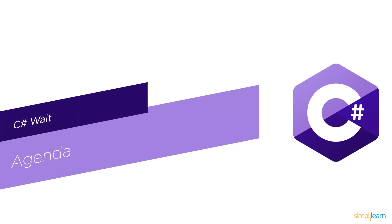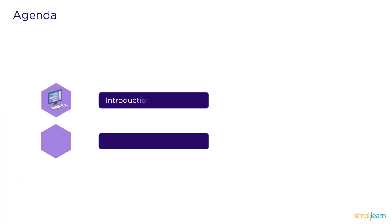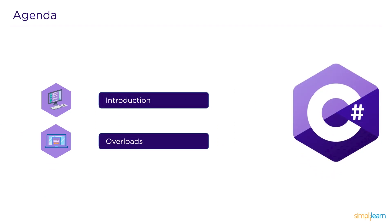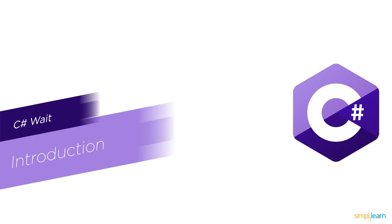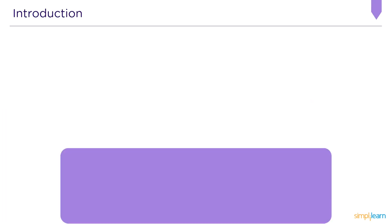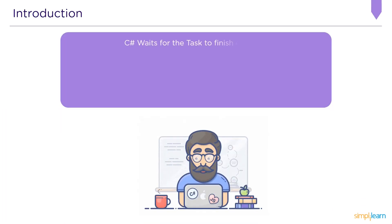Without further ado, let's get started with the agenda for today's session. First, we will define what exactly C# Wait is and which header file and assembly we use to declare it. The time it takes to complete execution is defined as C# Wait. The namespace or library used to declare C# Wait is System.Threading.Tasks, and the assembly used is System.Runtime.dll.